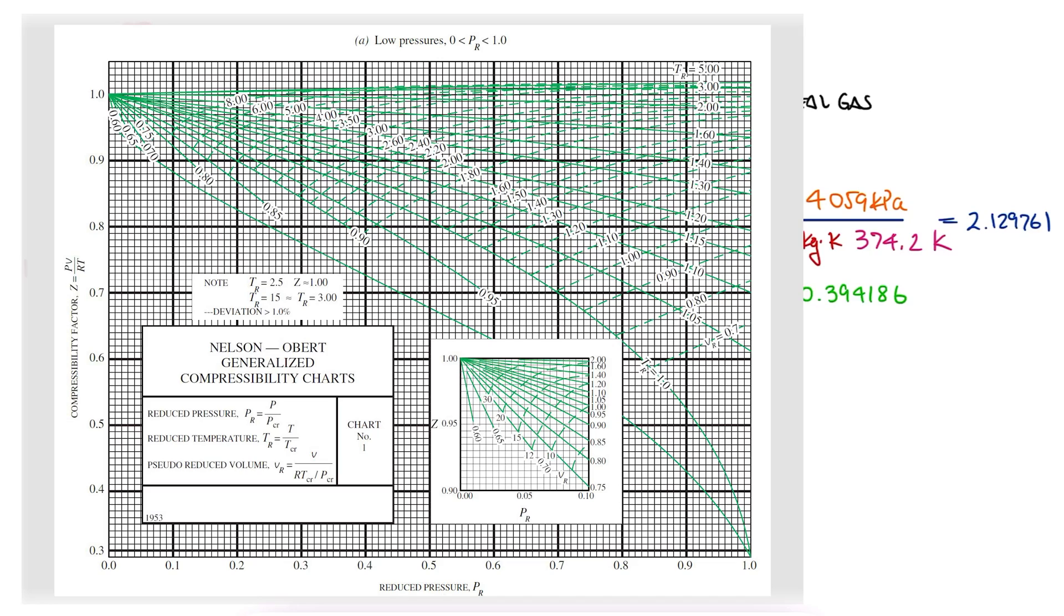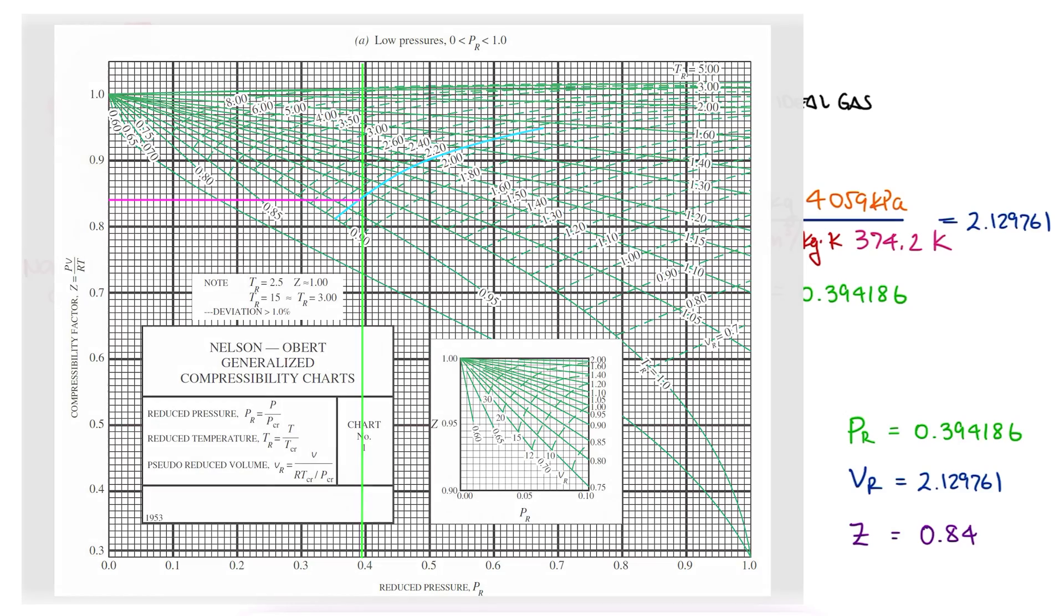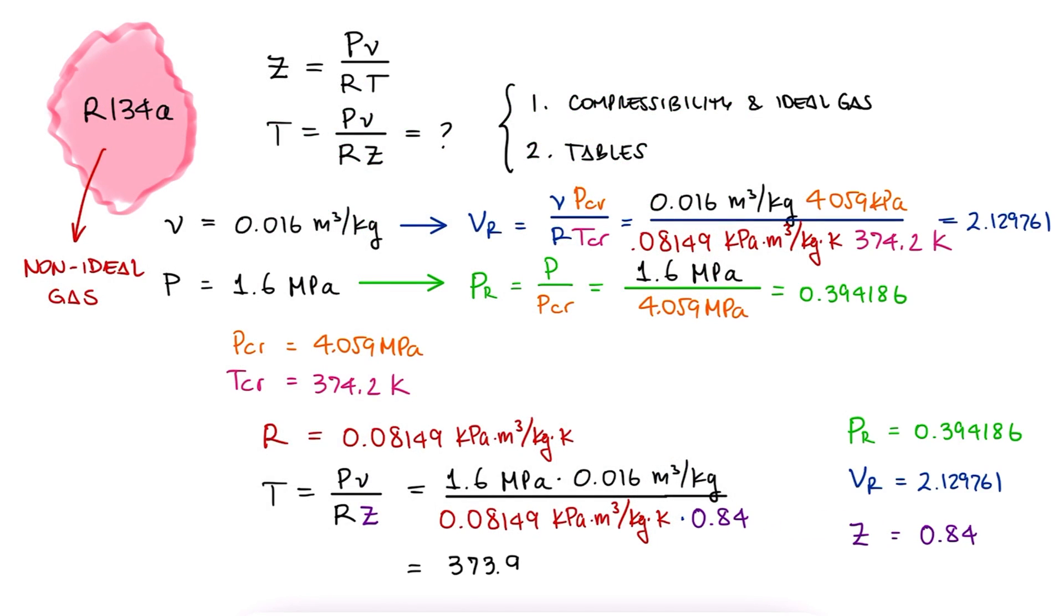For an axis value of 0.394, which is basically between 0.39 and 0.40, and a diagonal value for reduced volume of 2.13, which is a little bit farther than halfway between 2.00 and 2.20, we find that the Z factor is close to 0.84. We substitute this value in our initial expression and we find that the temperature is 374 Kelvin or 100.83 Celsius.